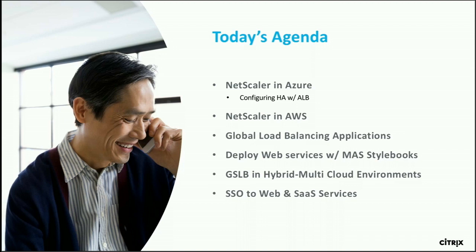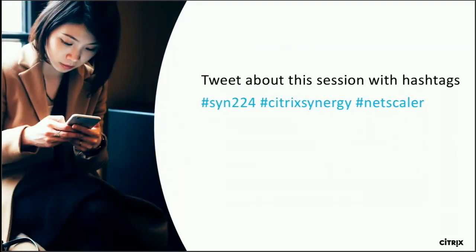I'll start by talking about deploying NetScaler in Azure, including how we provide high availability in Azure, then cover similar detail for AWS, and then how to distribute traffic globally between different environments. Many solutions here also work with on-prem deployments — it's really about extending into the cloud in a hybrid scenario. Toward the end, we'll show how to configure gateway services and provide single sign-on to your apps using NetScaler in this hybrid environment.